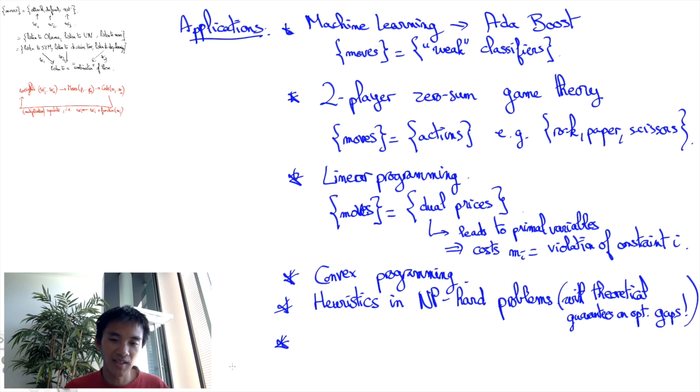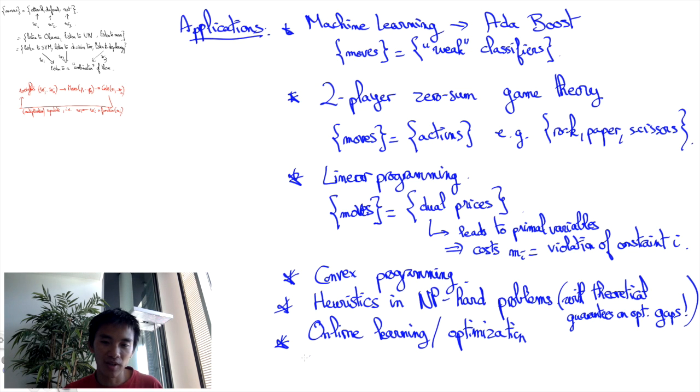And perhaps the most exciting application of Multiplicative Weights Update Algorithms is in online settings, especially online convex learning and online optimization. You also have applications in the form of so-called exponentiated stochastic gradient descent or subgradient descent and so on.